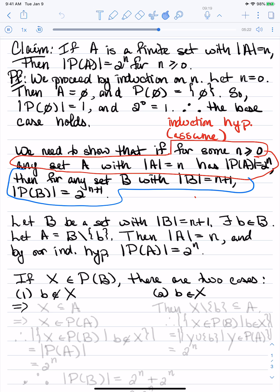In the first case, if b is not in x, this implies that x is a subset of A, which implies that x is an element of the power set of A. Therefore, if I look at the set of all x that are subsets of B that do not contain x, this is exactly the same as the set of all subsets of A. In particular, the cardinalities of these two sets are the same and equal to 2 to the n by our induction hypothesis.